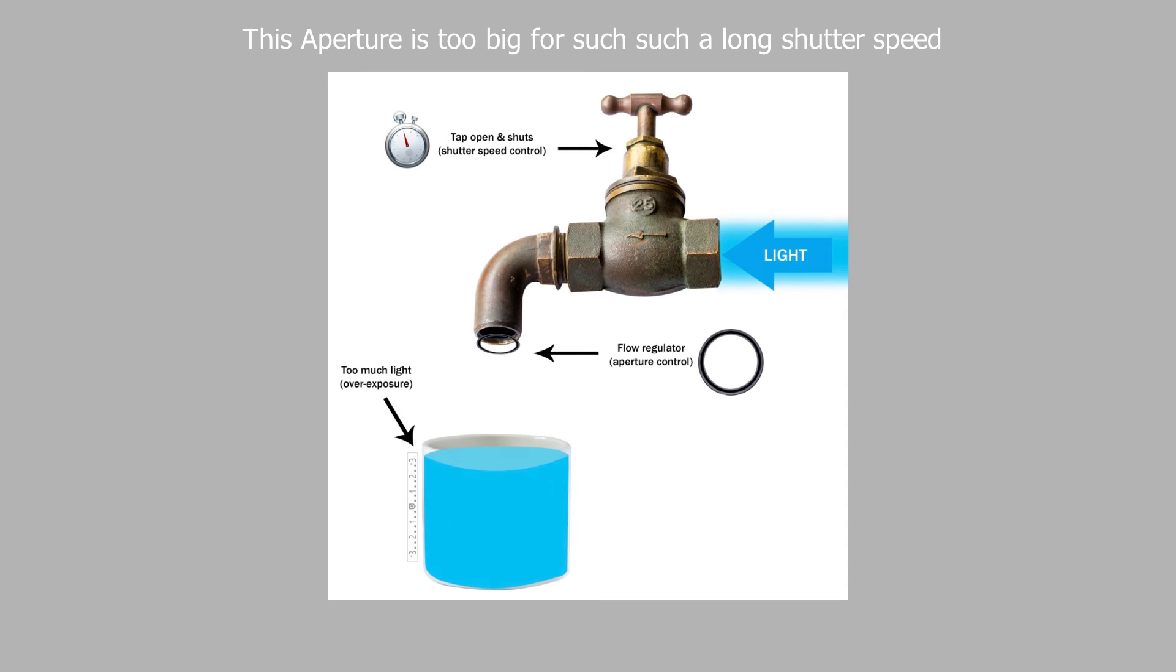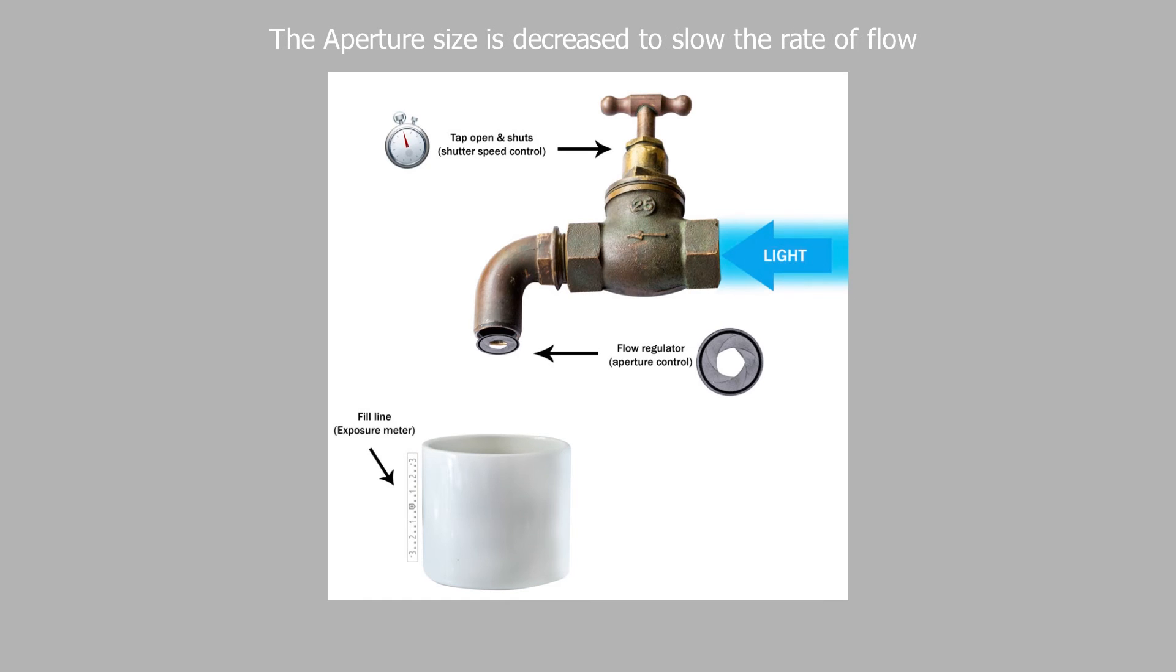This aperture is too big for such a long shutter speed. The aperture size is decreased to slow the rate of flow. Now the shutter can be left open without overexposure.